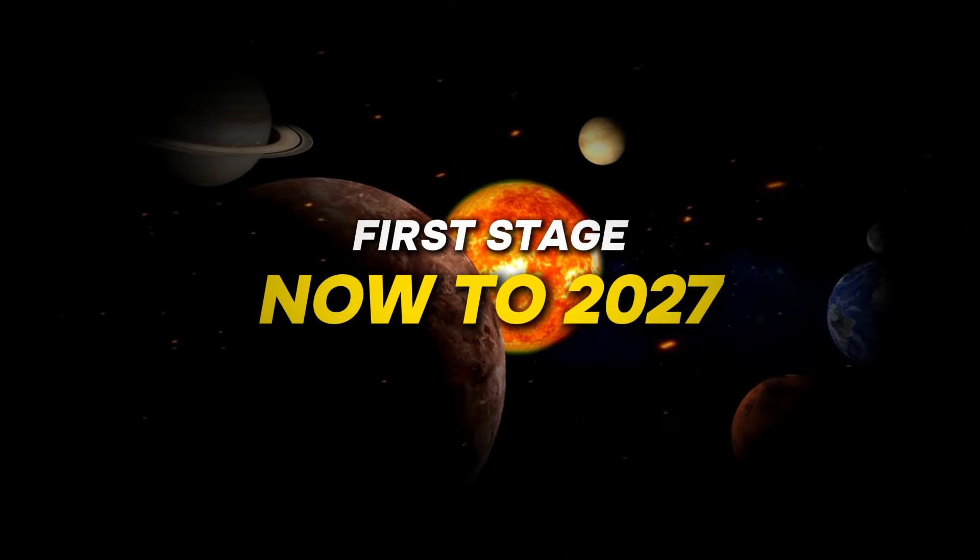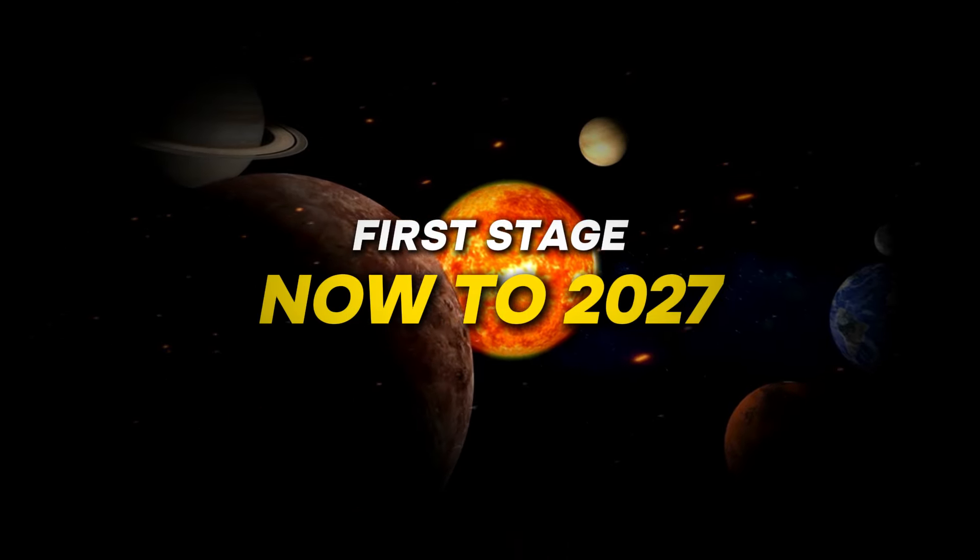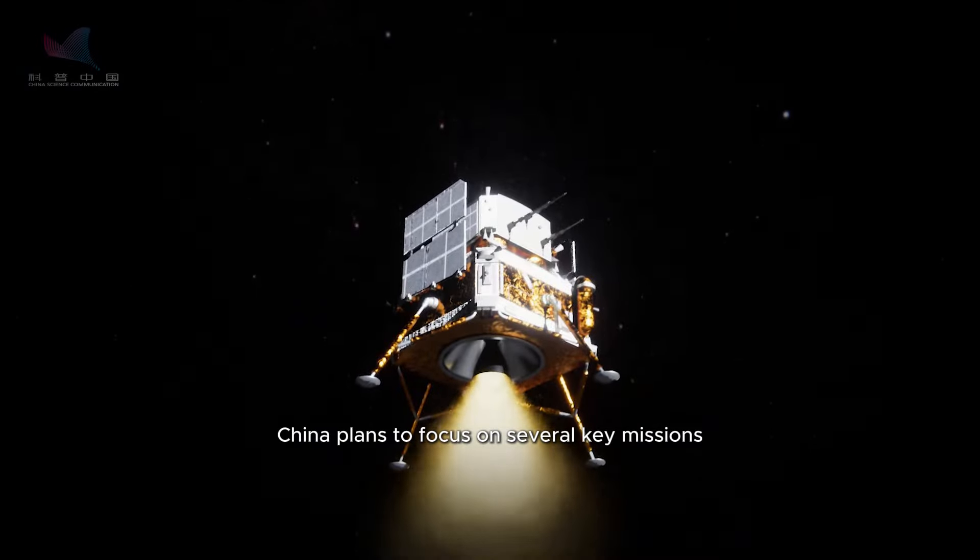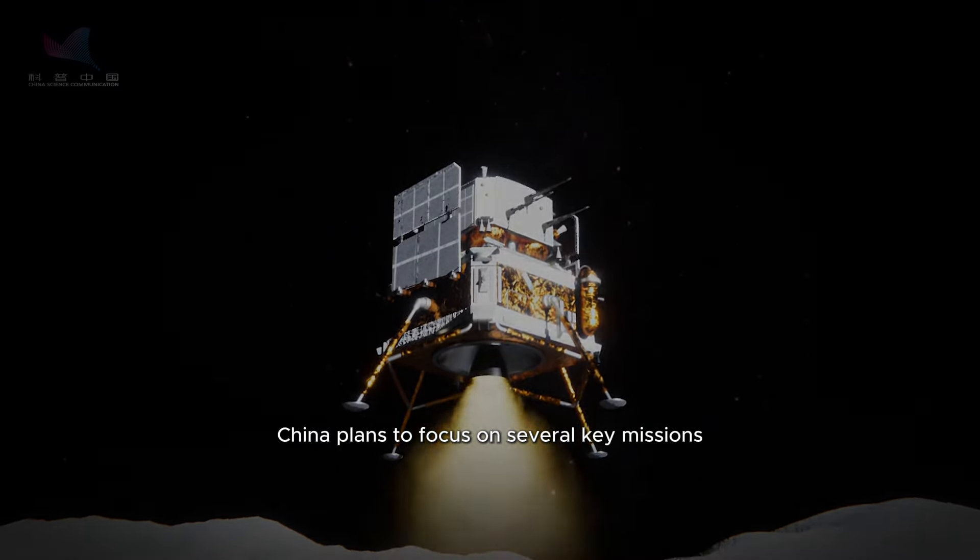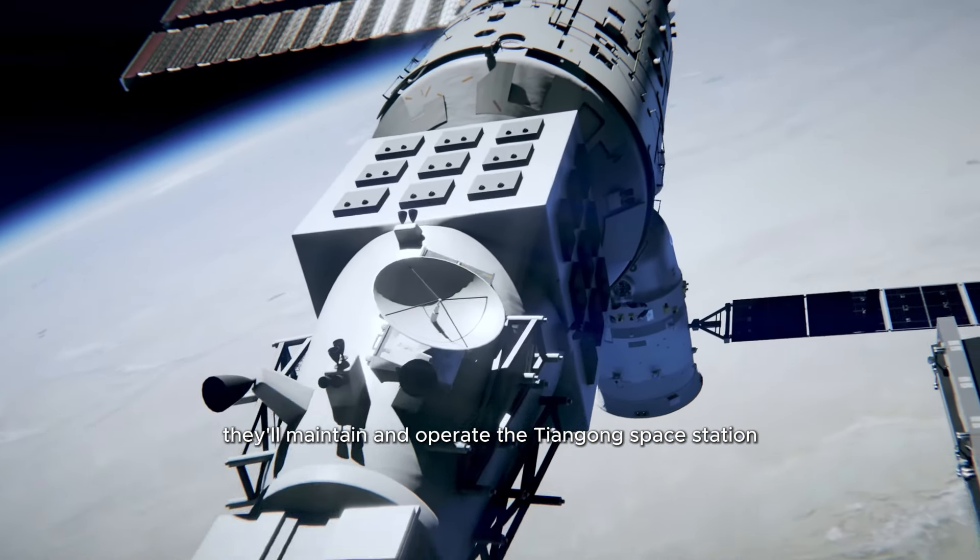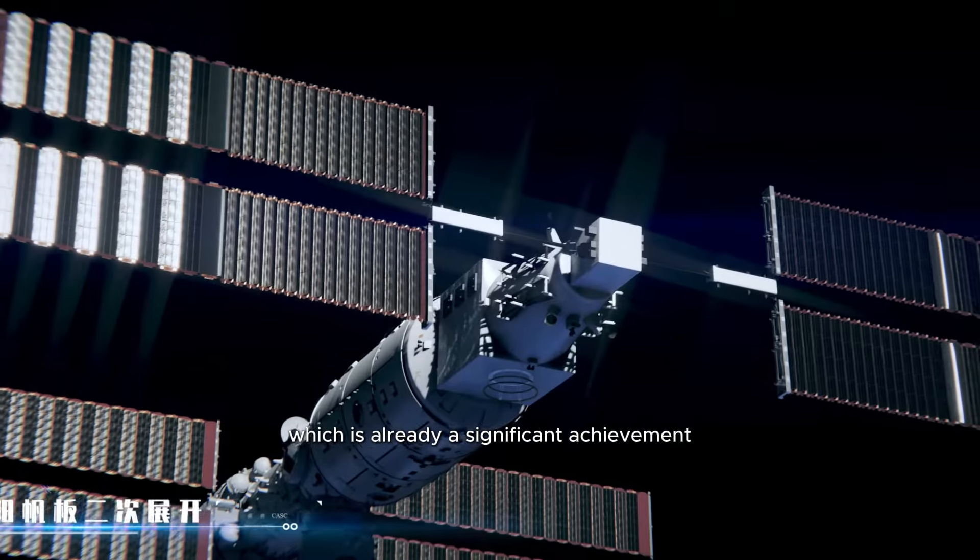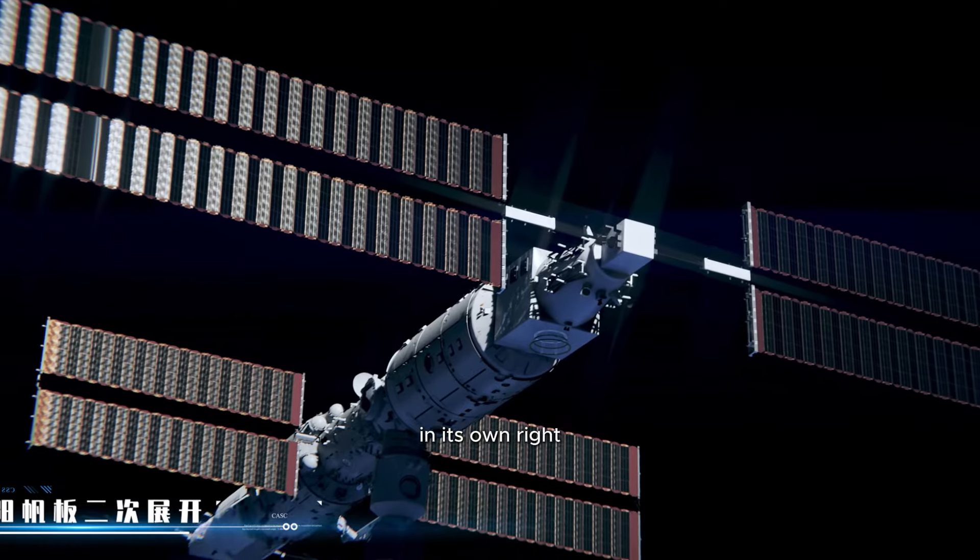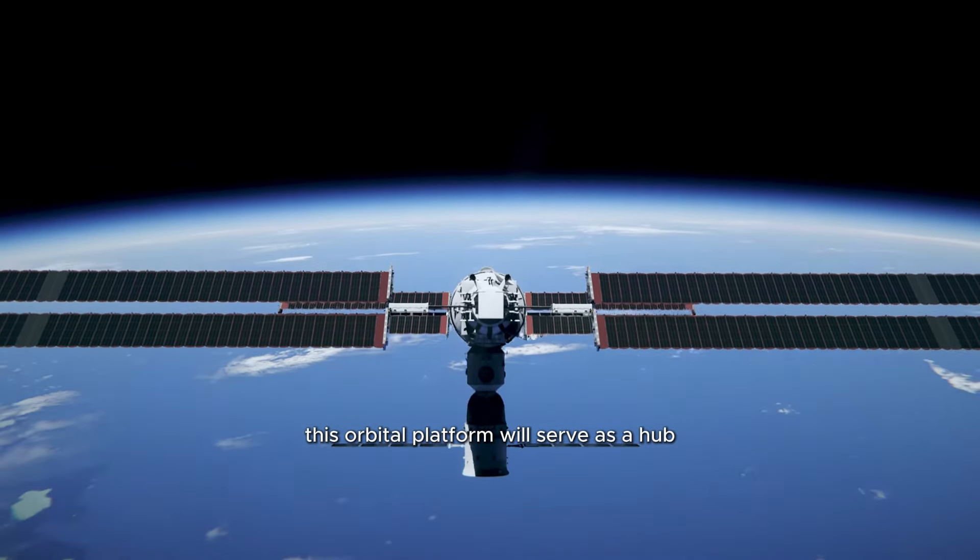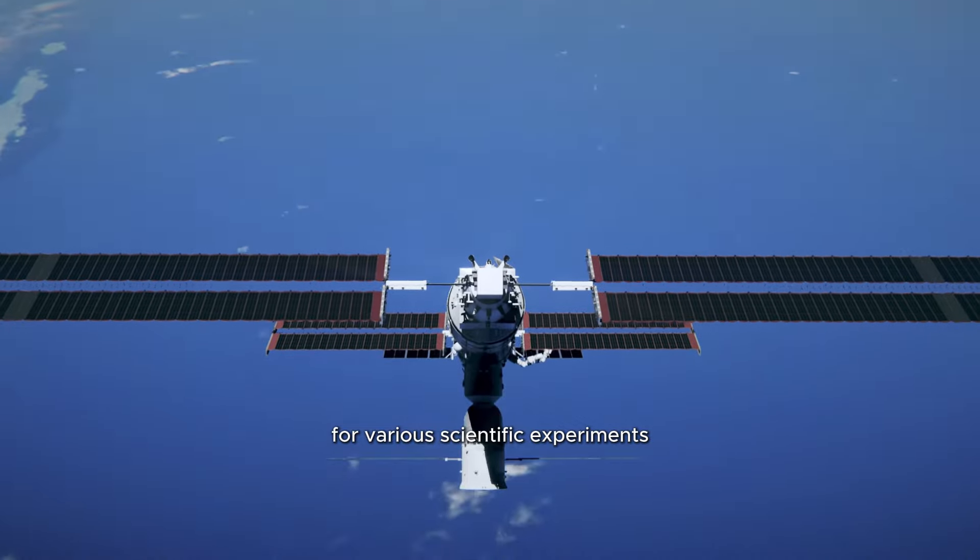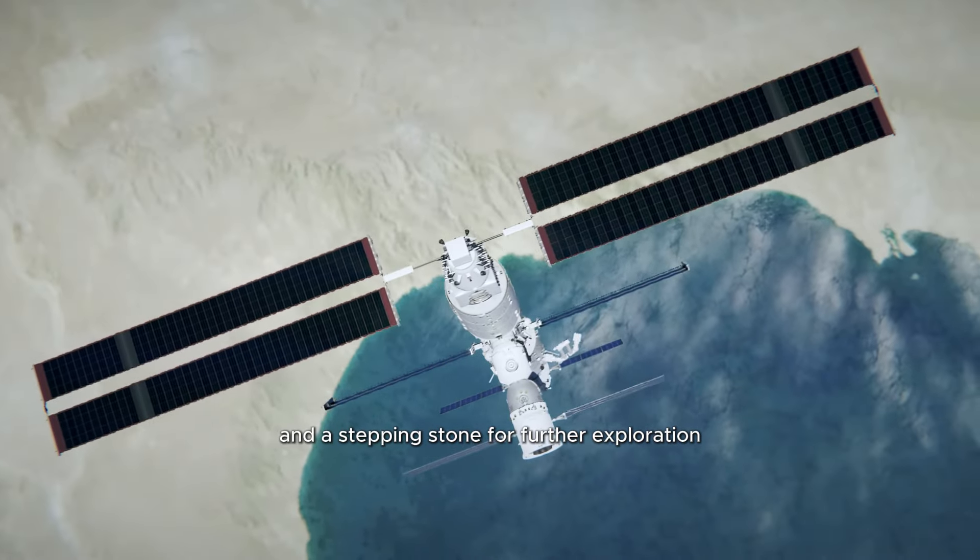First stage, now to 2027. In the immediate future, China plans to focus on several key missions. They'll maintain and operate the Tiangong Space Station, which is already a significant achievement in its own right. This orbital platform will serve as a hub for various scientific experiments and a stepping stone for further exploration.